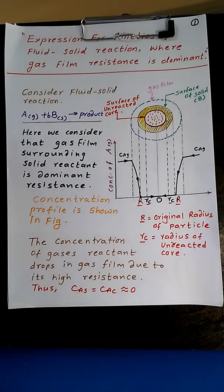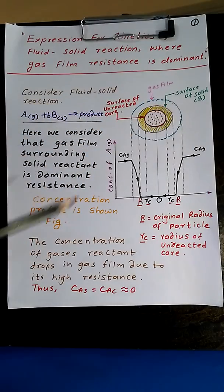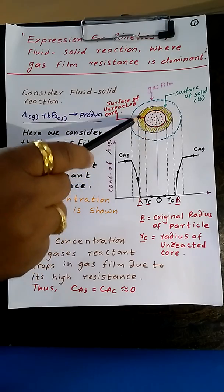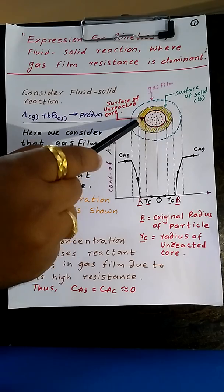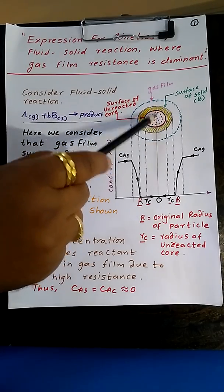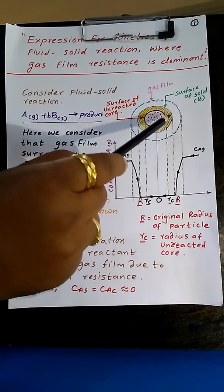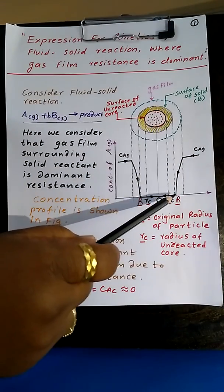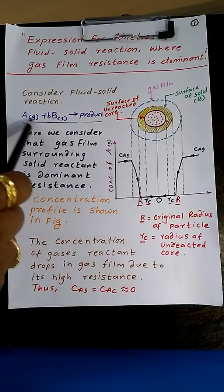The concentration profile is shown here. In this diagram, the dotted circle is the gas film, and the inner circle is the boundary for the total particle, or the original particle. This is the boundary for the unreacted core, which contains your reactant B that is unreacted. This is the ash formed due to the reaction between A and B, and this is the concentration profile of A driving towards the core while reacting.